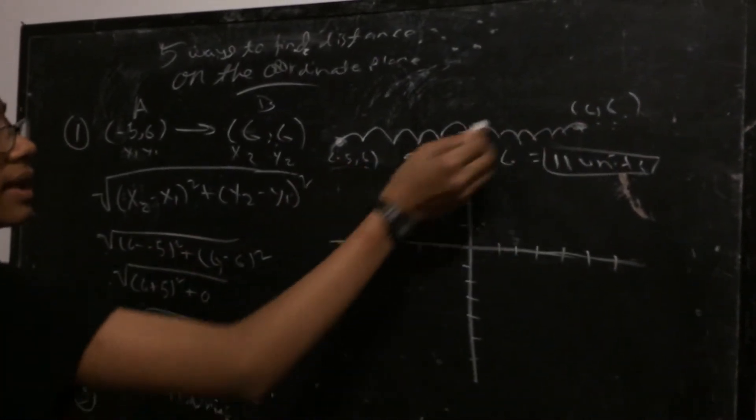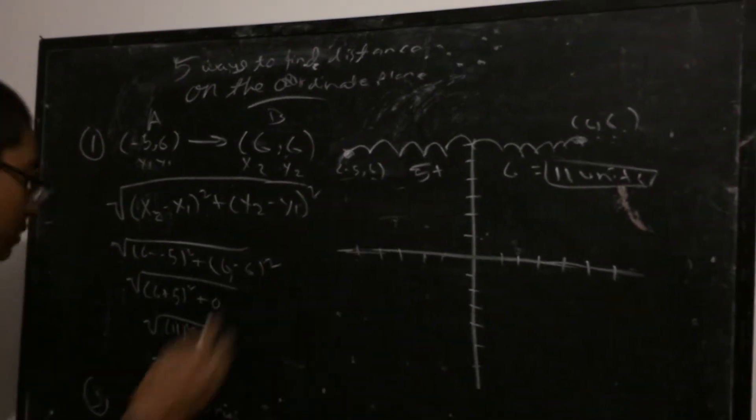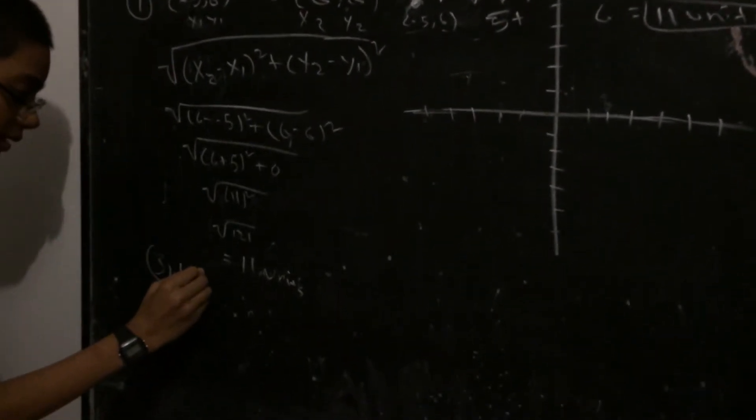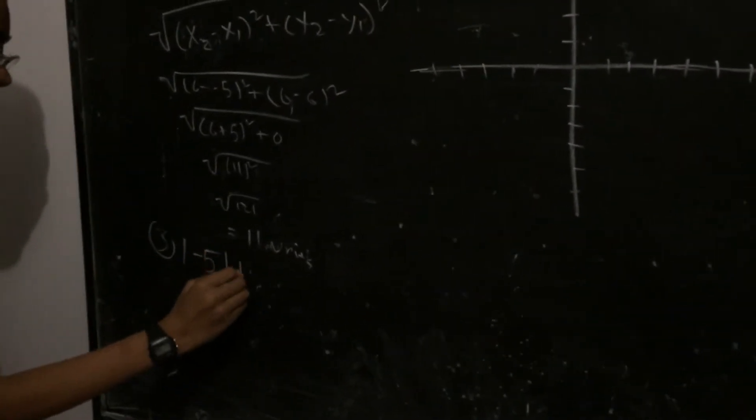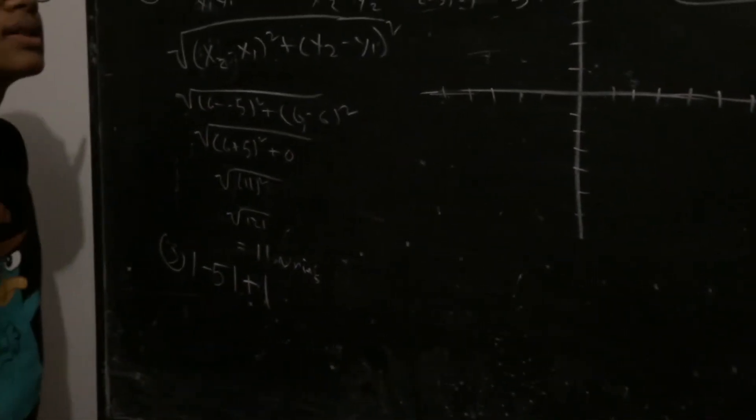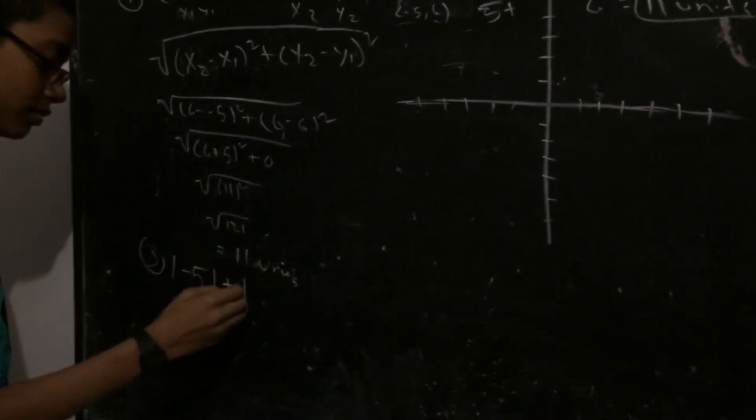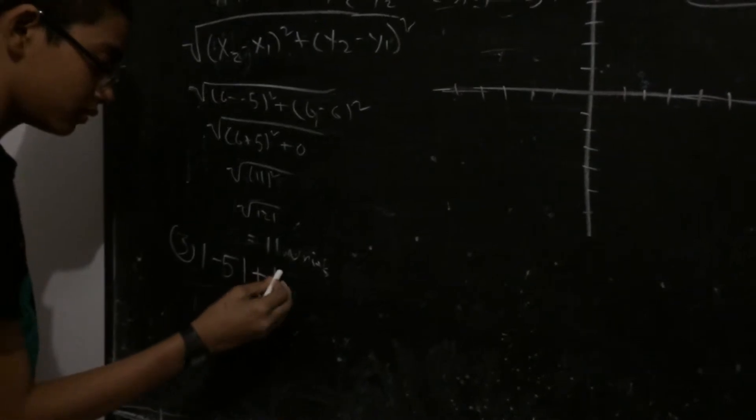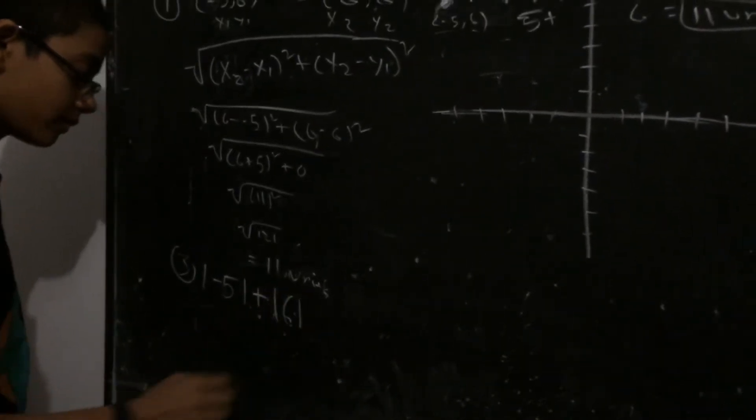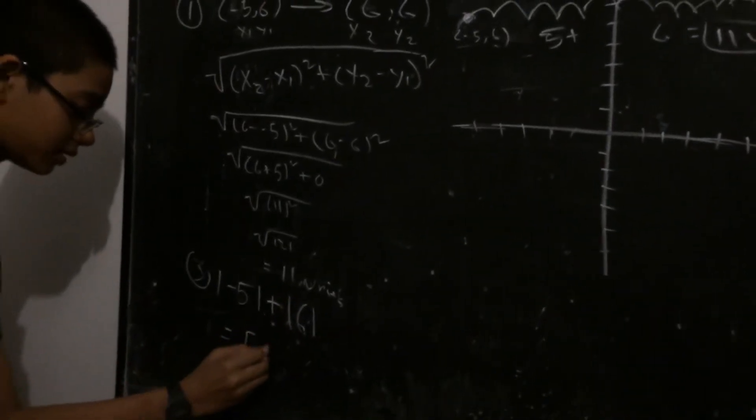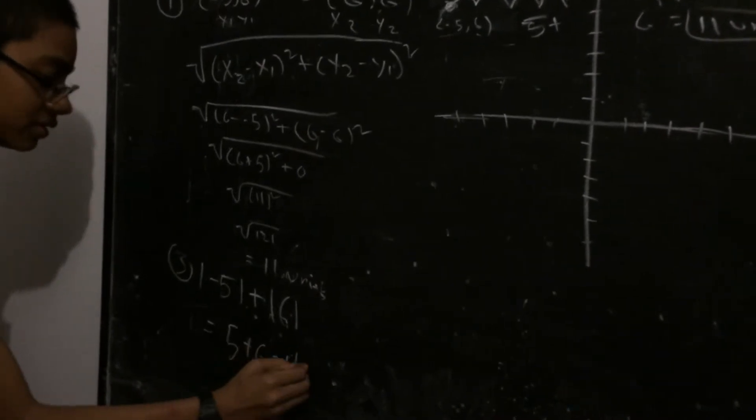So we do absolute value of negative 5 plus the absolute value of 6, and that's 5 plus 6 equals 11 units.